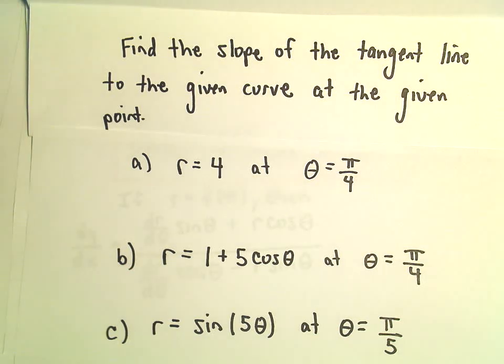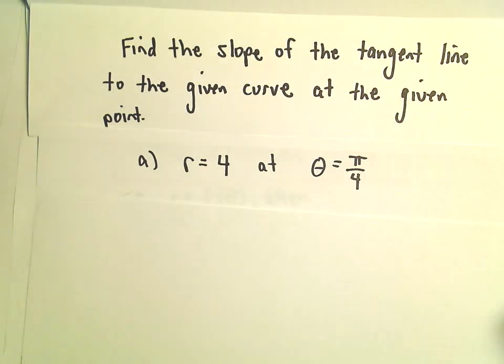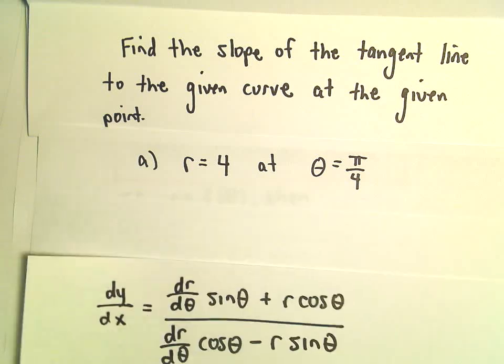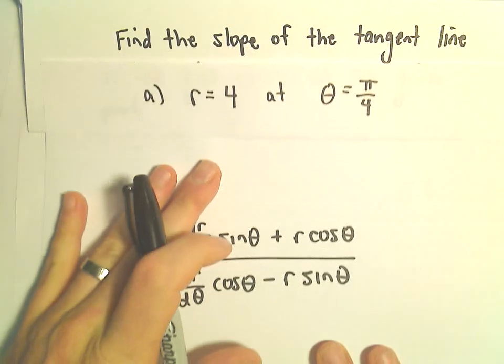So part A here, we have r equals 4, and we're going to find the derivative, the slope of the tangent line, rather, at theta equals pi over 4. So here's our little formula that we're going to use. Let's fill this in as we go.